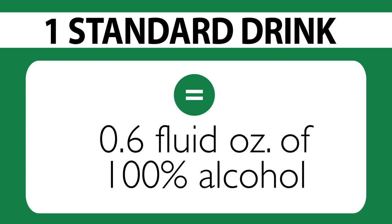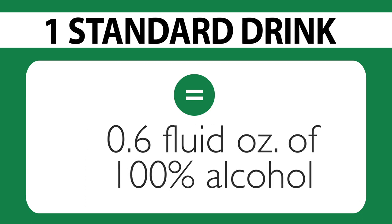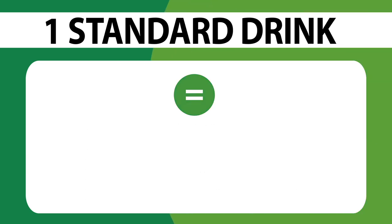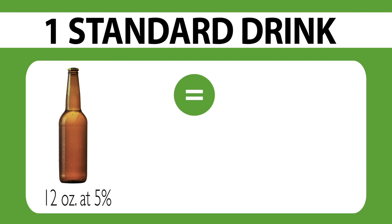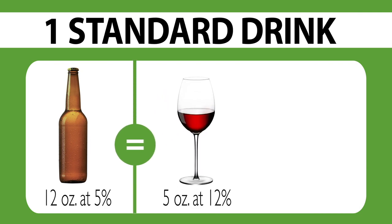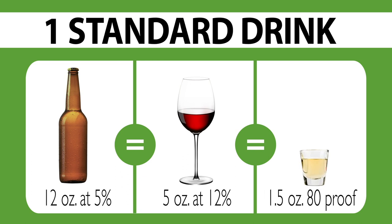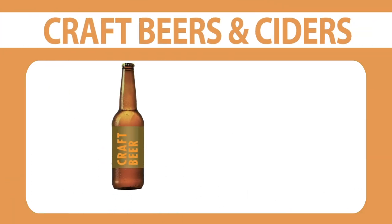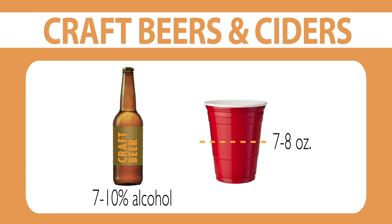Check labels for alcohol content. Twelve ounces of beer or hard seltzer at 5% alcohol. Five ounces of wine at 12% alcohol. One and a half ounces of liquor at 80 proof. Craft beers and ciders can have higher alcohol content, so one standard drink may only be 7 or 8 ounces.